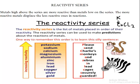The reactivity series is a list of metals placed in order of their increase in reactivity. It can be used to make predictions about the reactions of metals. Just as I stated here, potassium will knock copper off and then we get potassium chloride.